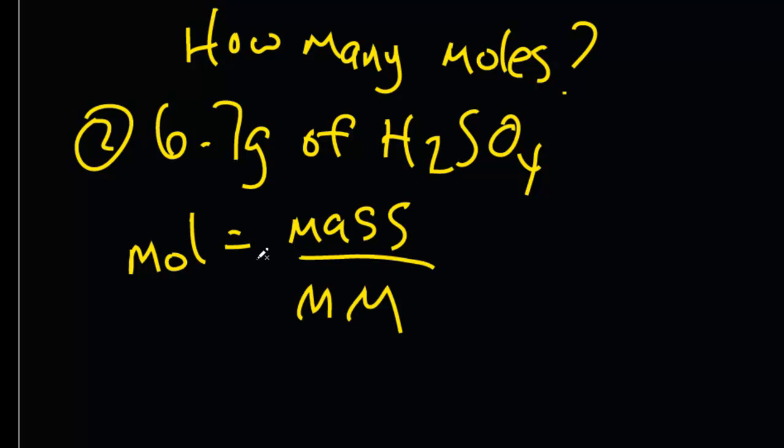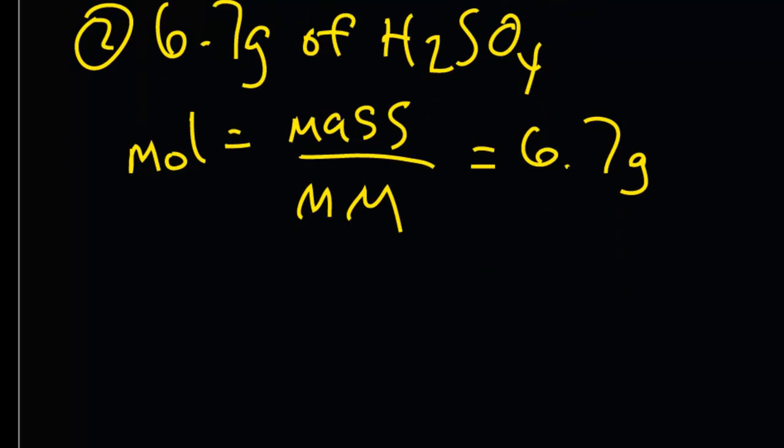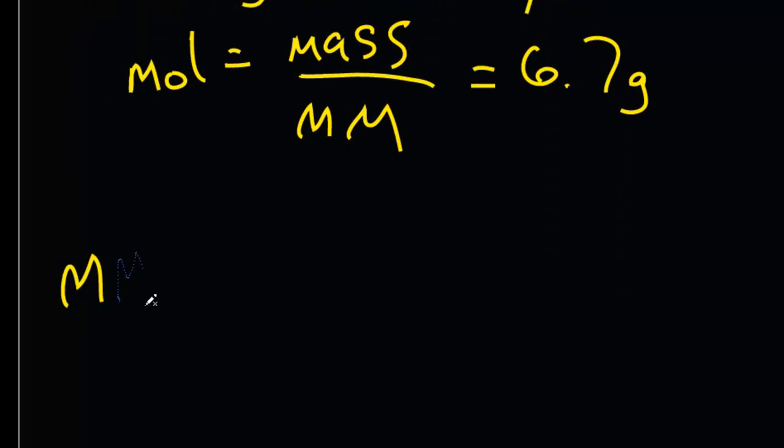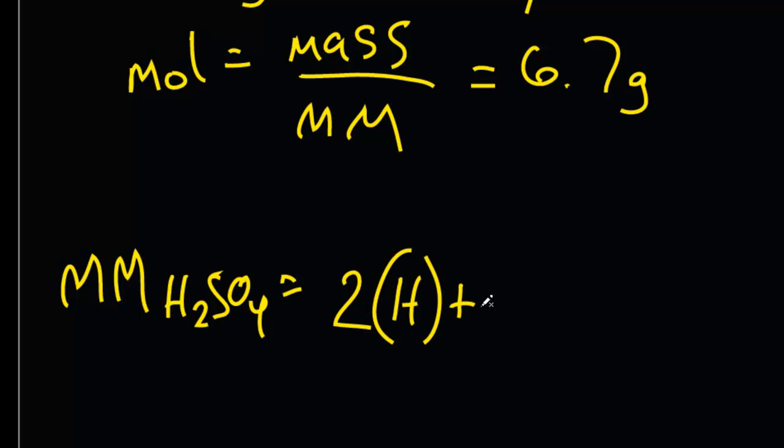Mom is mad over M&M. You're given the mass, which is 6.7 grams that you can put in your given column. And if you need to find moles, well, you're actually given something else incognito. You're given the molar mass of sulfuric acid, but you're going to have to calculate it. So H2SO4, molar mass equals 2 times H, plus 1 times S, plus 4 oxygens, right?